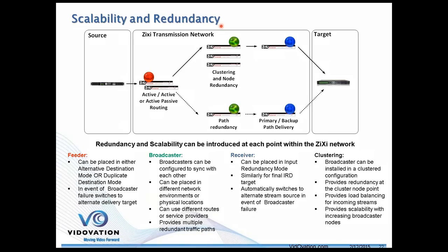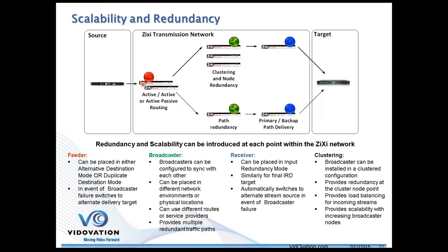For scalability and redundancy, you could have an encoder source with a couple of redundant Zixi feeders. You can have dual redundancy — redundant encoders, maybe one going over satellite and one through Zixi. We can have two active streams running simultaneously with redundant paths at all times. The target decoder sees those paths and picks whichever one has better quality of service — either A or B.